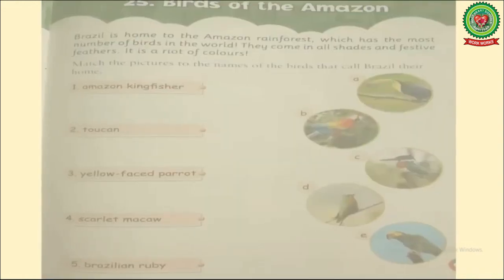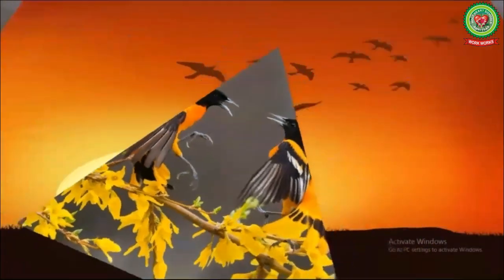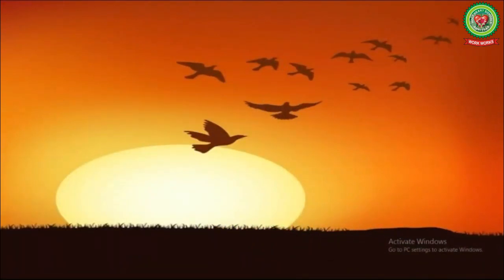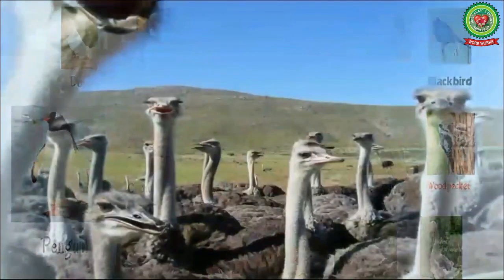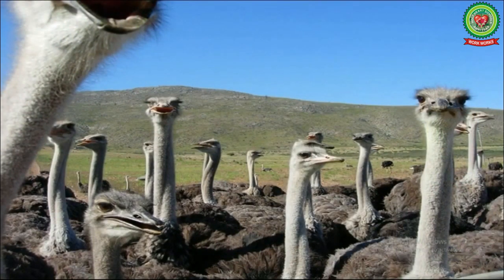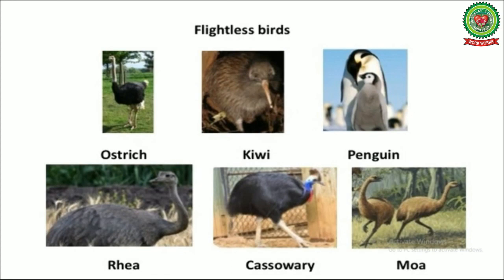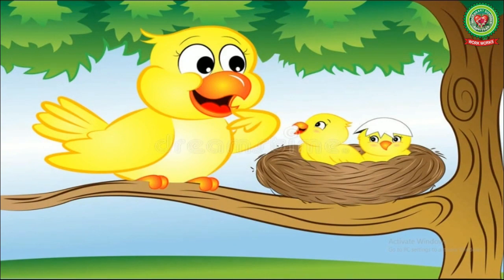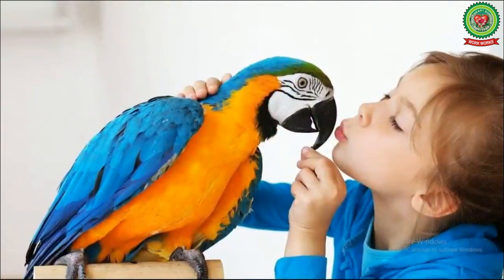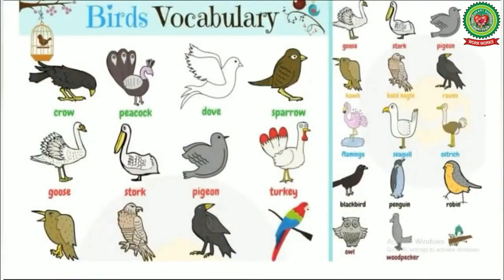Birds are the living beings which have feathers, beak, and wings. Some birds can fly to go from one place to another — for example, dove, parrot, sparrow, swallow, etc. There are some birds that cannot fly, and they are known as flightless birds — for example, ostrich, kiwi, penguin, rhea, etc. Most birds live in a nest which is set up on a tree. We even keep birds as pets because they are the friend of humans.